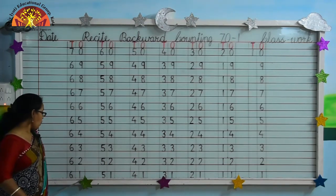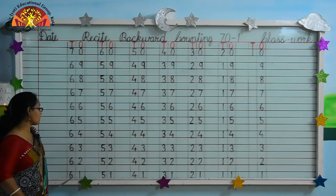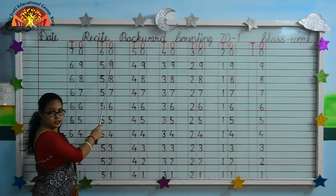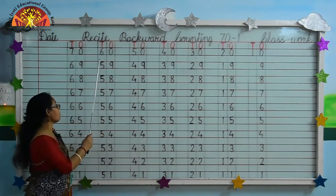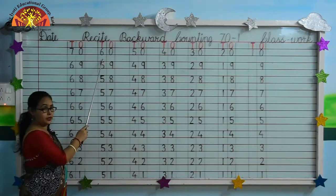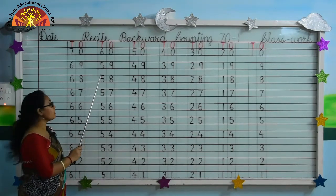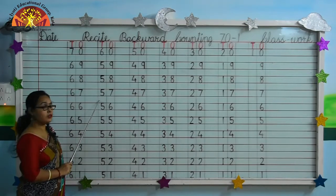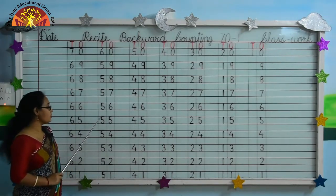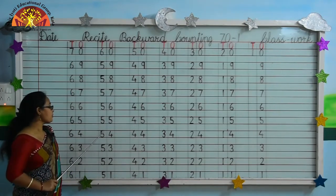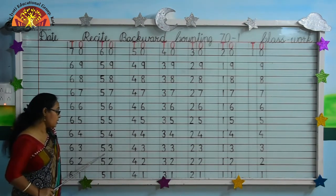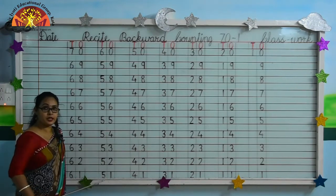Kids, now you tell me what comes before 61. Yes, 60, 59, 58, 57, 56, 55, 54, 53, 52, 51.